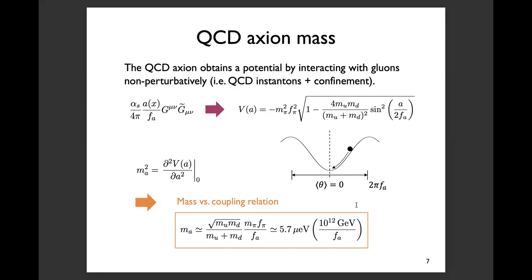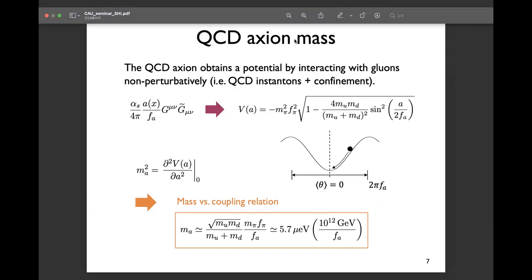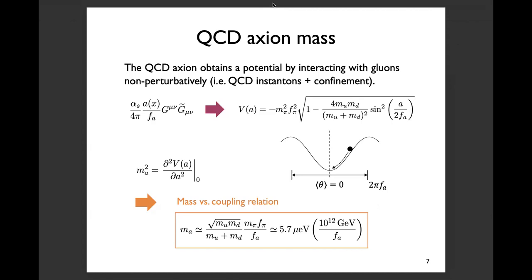It will be hard to make axion kination compatible with the elegant solution to the strong CP problem, because it may require quite a large explicit PQ-breaking to generate observable gravitational waves. Thank you for your comment. I think we have had some very good questions and feedback. Thank you all for your participation and for the nice talk. Hopefully we'll see each other again in person in the future, at IBS or Zhiyuan University.